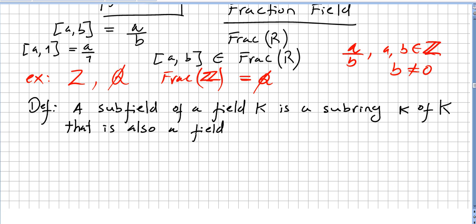Last definition: a subfield of a field K, this is big K, is a subring of big K, this k is a small k, that is also a field. So a subfield of a field is a subring that is also a field.